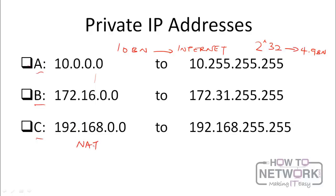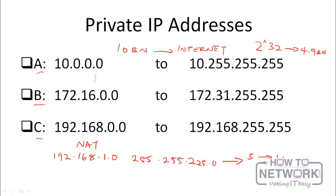Internal private addresses are converted to global IP addresses through a process called Network Address Translation (NAT). For example, a network of about 200 users can be given a class C private address such as 192.168.1.0 with subnet mask 255.255.255.0. When those users connect to the internet, they can all be translated to just a few addresses through Port Address Translation (PAT). This way, 200 users might translate to only 5 public addresses, saving 195 addresses and making more available for the internet.